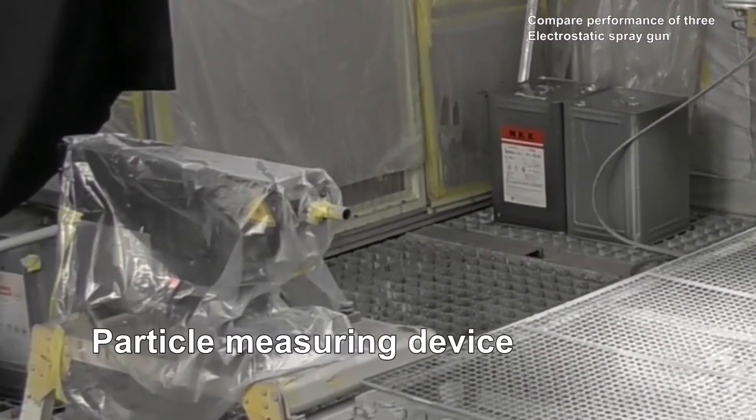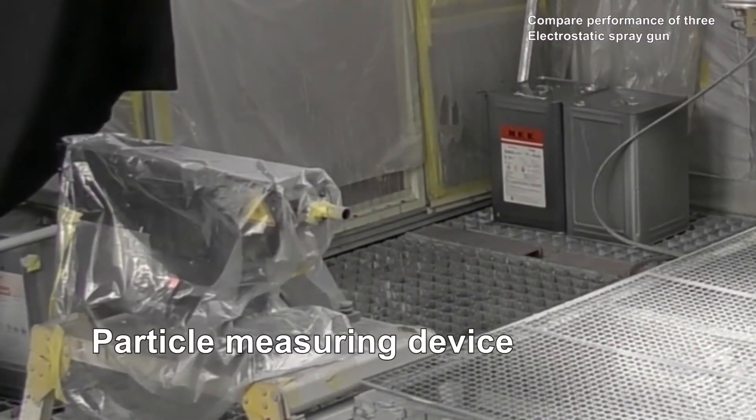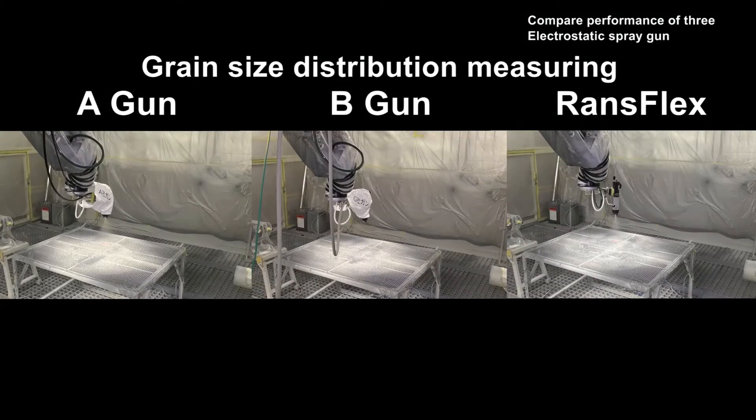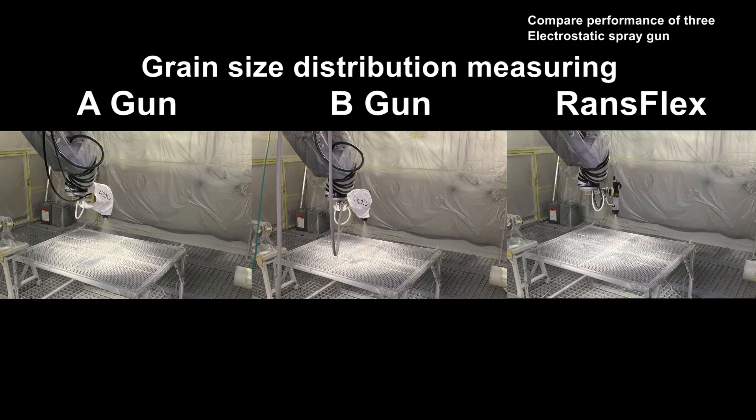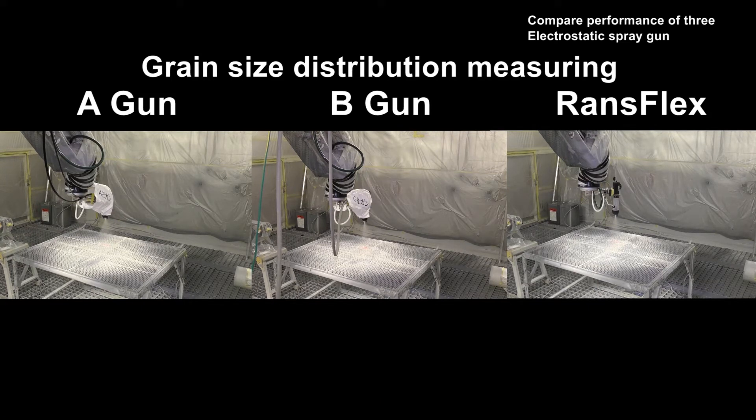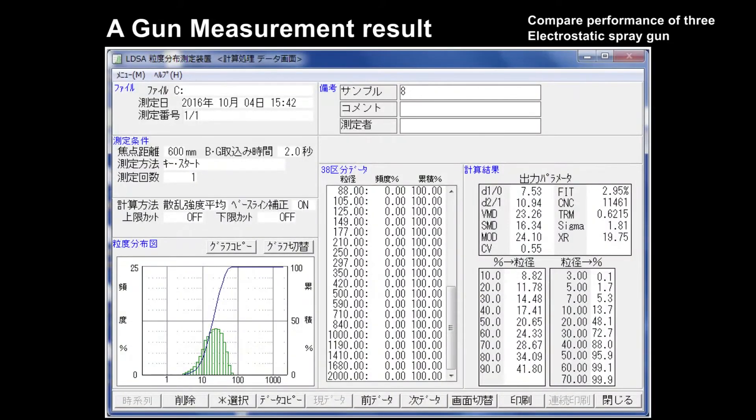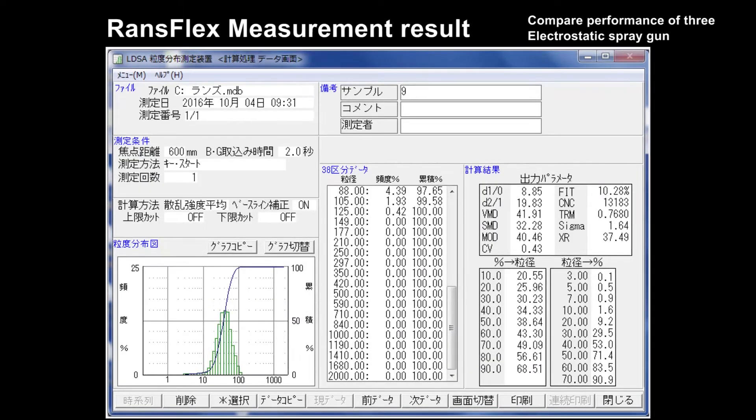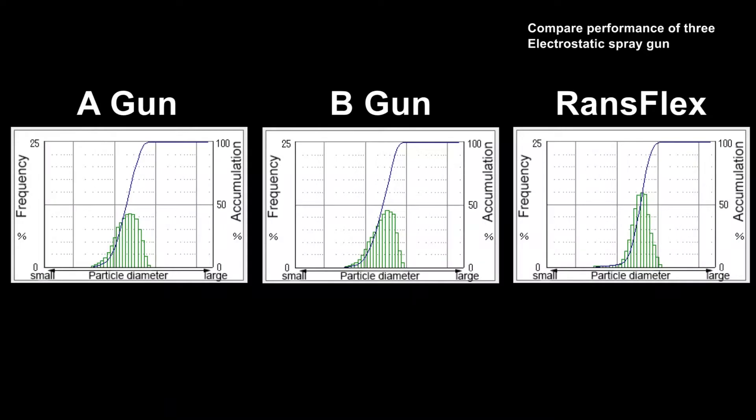This device measures particle diameter of atomized coating material that passes through a laser beam. The measurement result indicates RansFlex produces fine particles, making the size of the atomized particles uniform.